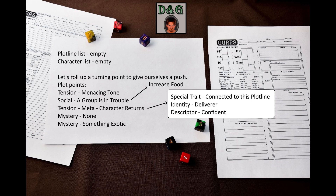Adventure Crafter has some tables that will help me determine the role the new character plays in the adventure. I will have to roll the special trait, character identity, and character description. The special trait I got is the character is connected to this plotline, identity is 'deliverer', and descriptor is 'confident'. But even with all that I had to decide where the game's events are taking place and who the threatened group is.